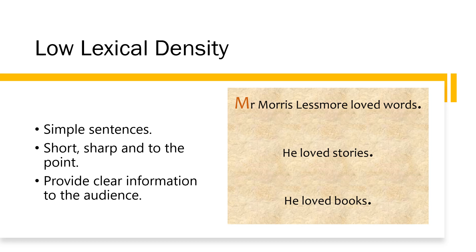Sentences with low lexical density are generally simple sentences. They are short, sharp and to the point and provide clear information to the audience. Using sentences with low lexical density, even in more complex texts, can be very useful for writers and their audience when they want to clearly convey a certain piece of information. In the example, Mr. Morris Lessmore loved words. He loved stories. He loved books. This is the first thing that William Joyce tells us about this character, and it makes it very clear to the audience that this is a strong passion of the main character, so we know exactly what we need to know about him to understand the rest of the text.